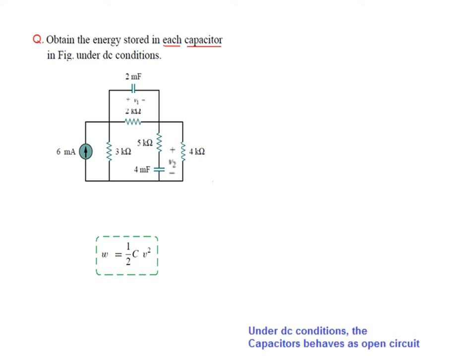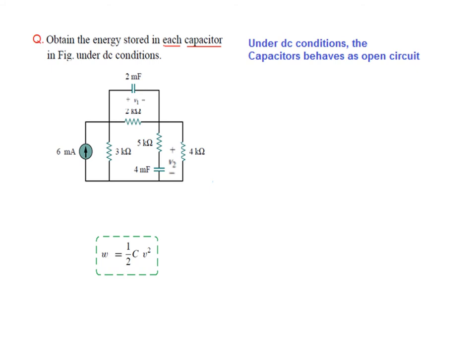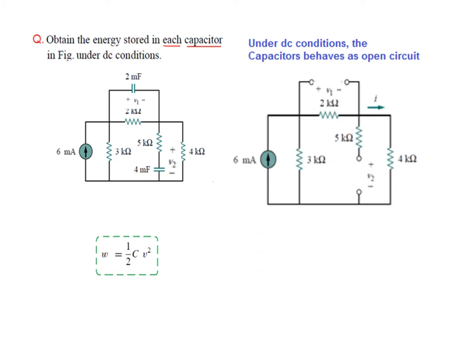We apply the DC condition. And we have learnt that under DC condition, the capacitor behaves like an open circuit. Our equivalent circuit will look like this. The capacitors open here, the capacitor open here. And we can, for our ease, just eliminate the extra arms. If we eliminate these, then our circuit will look like this. We need to find the voltage V1, and also we need to find this voltage V2, which is actually the voltage across 4 kilo.